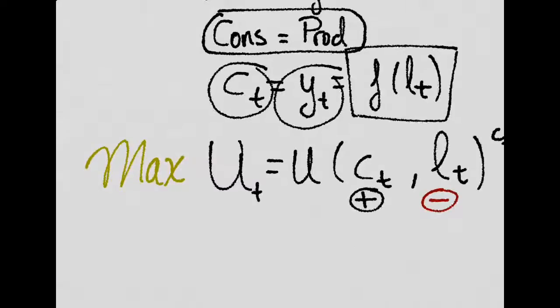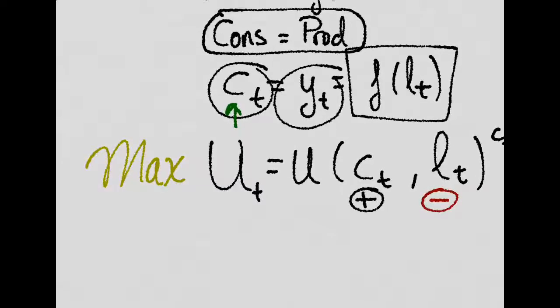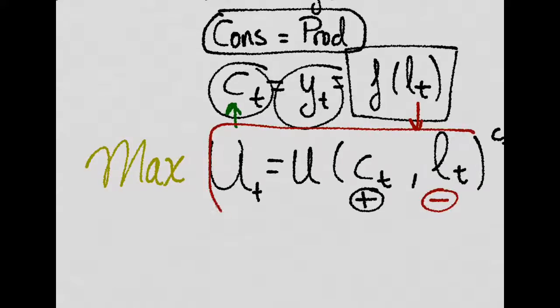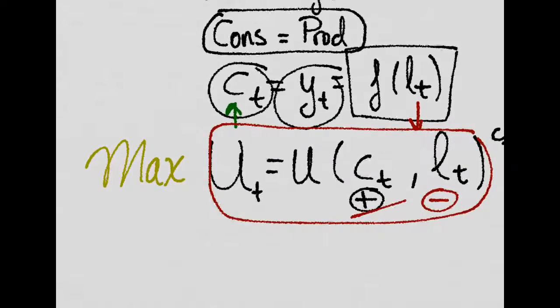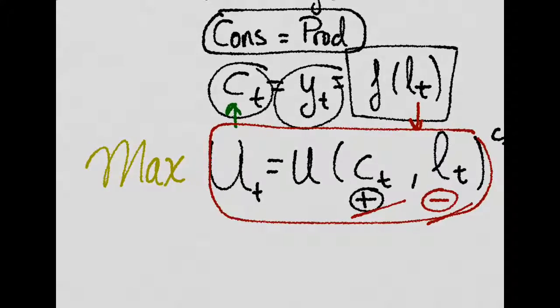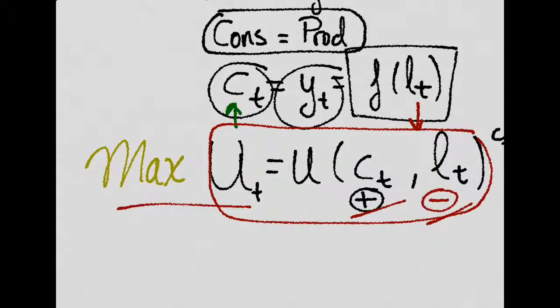So Robinson Crusoe sees the amount of consumption he gets as something positive, but the work effort as something negative. So his utility function would depend positively on consumption and negatively on the labor, the amount of hours he works. And as a rational agent, he would want to maximize this utility function.